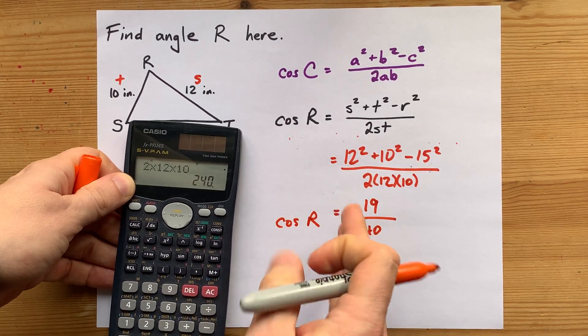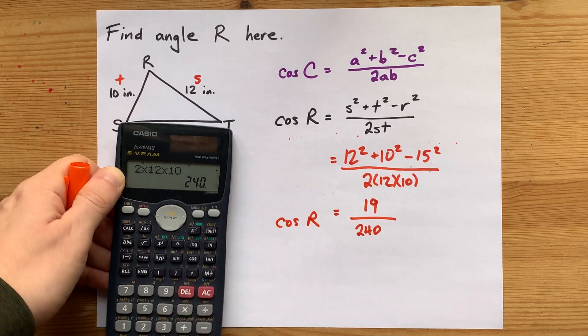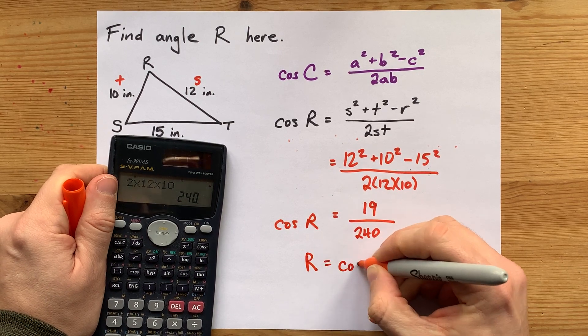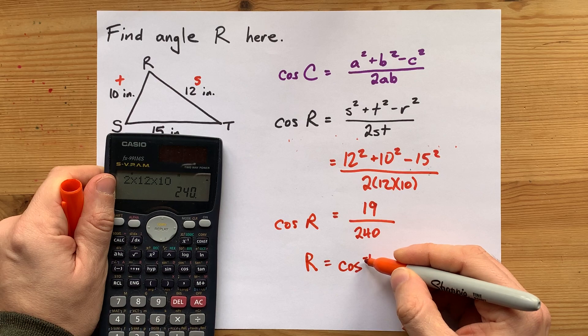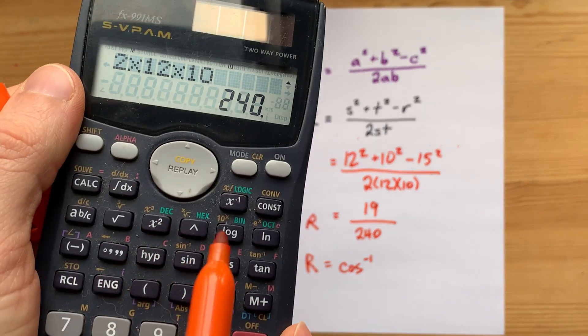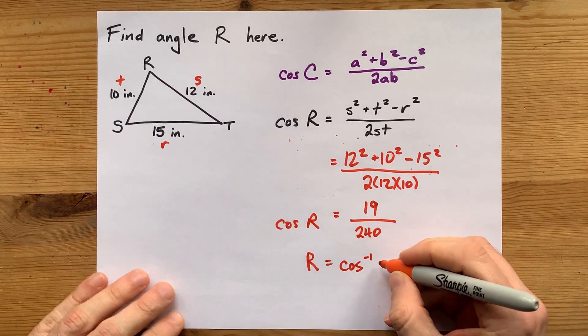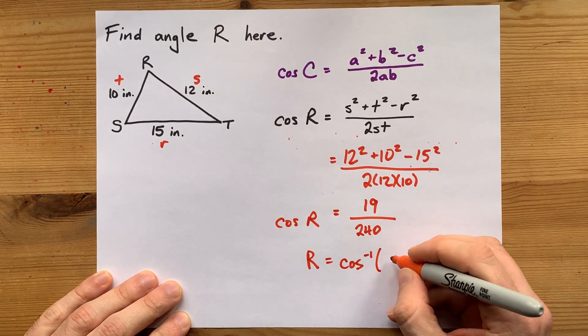So the cosine of angle R is that. Now that's not the size of the angle. That's clearly just a fraction. I have to undo cos as well. The way I'm going to do that is to move it to the other side and write cos to the power of negative one. It's actually inverse cos. But you'll see it on your calculator as cos to the negative one. Some people call it arc cos, or inverse cos.